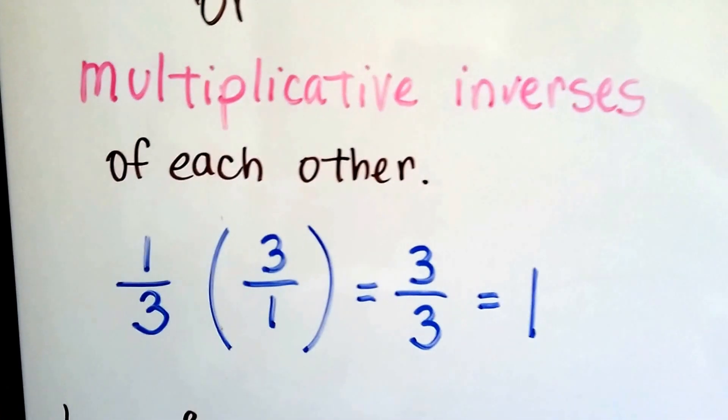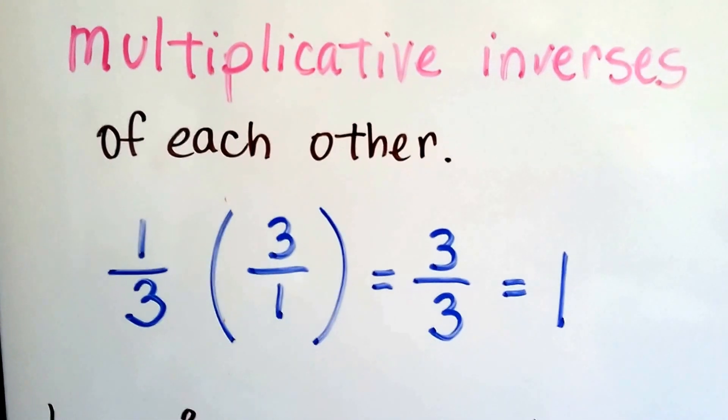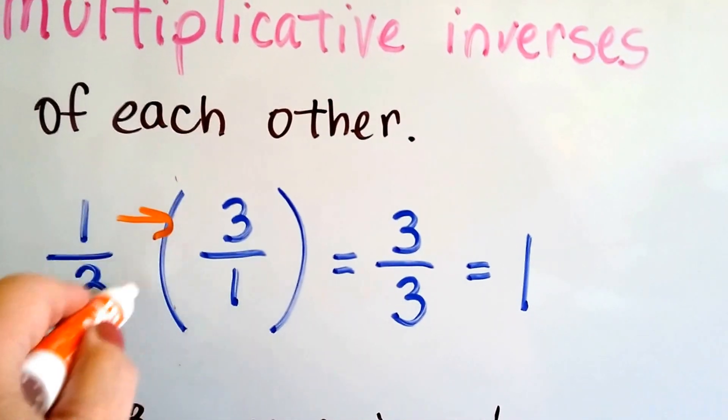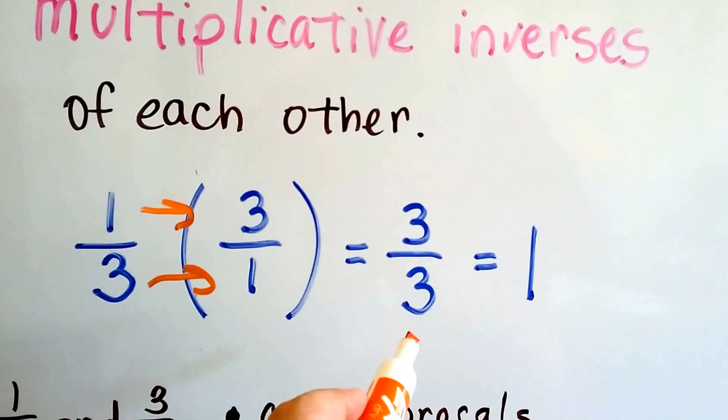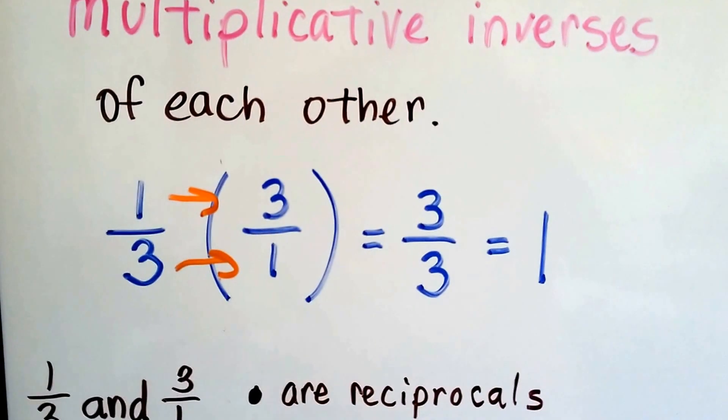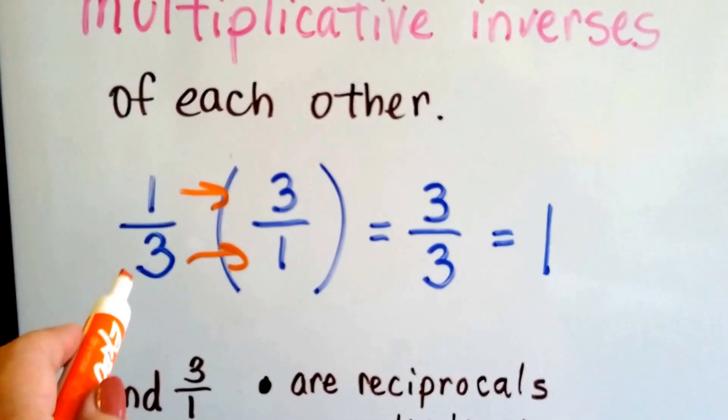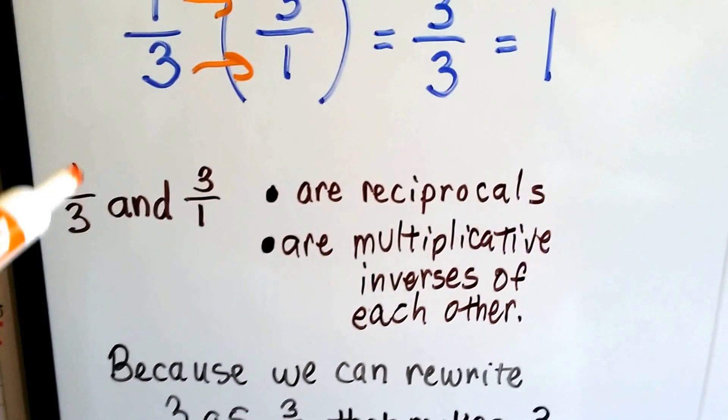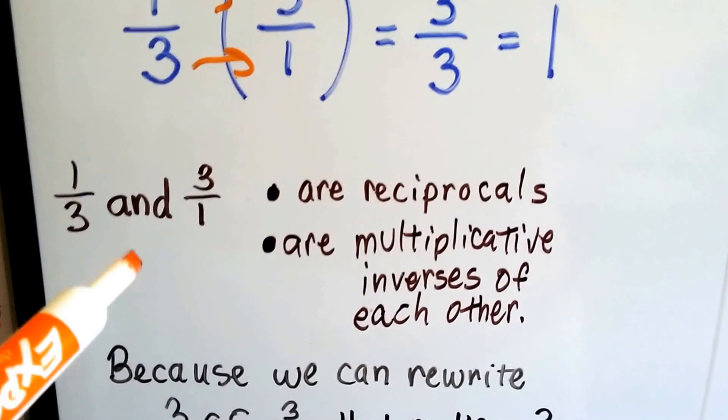If we have 1 third, its reciprocal would be 3 over 1, because when we multiply these to each other, we get 3 over 3, and that equals 1. So 3 over 1 is the reciprocal of 1 third. 1 third and 3 over 1 are reciprocals.